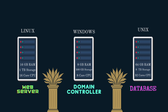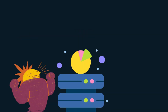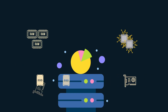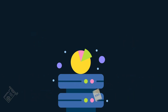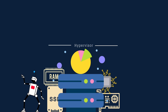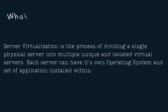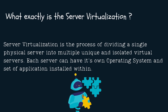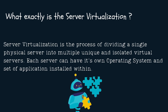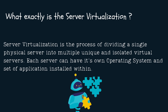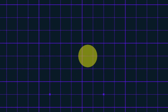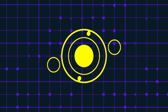Let's revisit our previous example where a company had to introduce three new servers in their environment. Instead of ordering three physical servers, the company could order a single powerful server with more RAM, CPU, storage, and network cards. With the help of a special piece of software called a Hypervisor, this powerful server can now run multiple servers virtually. By definition, server virtualization is the process of dividing a single physical server into multiple unique and isolated virtual servers. Each server can have its own operating system and set of applications installed, meaning you can run operating systems in a virtual environment instead of on physical hardware.